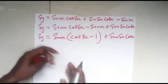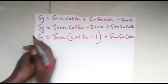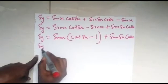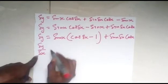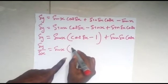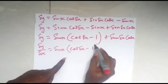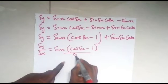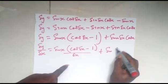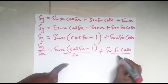Now since we are looking for dy/dx, we need to divide by δx. So dividing by δx, we have that δy over δx equals sin x times (cos(δx) minus 1) over δx, plus sin(δx) cos x over δx.